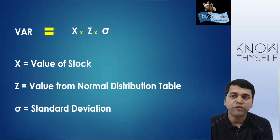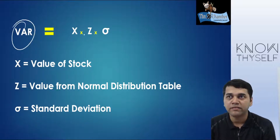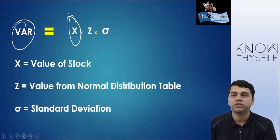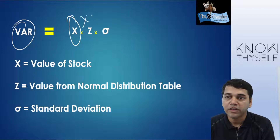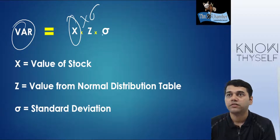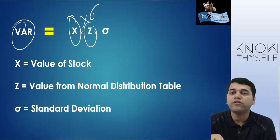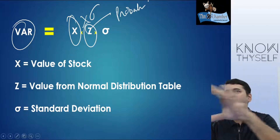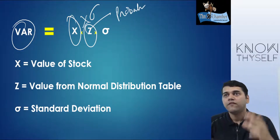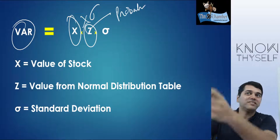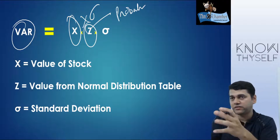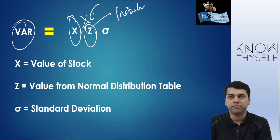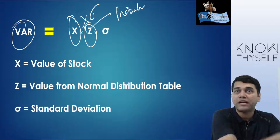What are you trying to find out? Your value at risk. Value at risk means value should be there — X is your value, you have invested so much. Risk means into standard deviation. At a point you are finding out Z, that means probability. Value at risk: I have got a value, risk is multiplied by the standard deviation, and Z is the probability — what is the probability that I might lose that much amount?